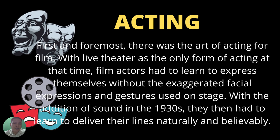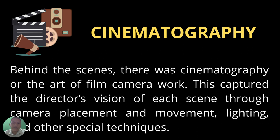In terms of acting, there was first the art of acting for film, with live theater as the only previous form of acting. Film actors had to learn to express themselves without the exaggerated facial expressions and gestures used on stage. With the addition of sound in the 1930s, they then had to learn to deliver their lines naturally and believably, connecting emotionally with the audience.